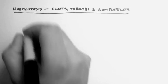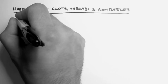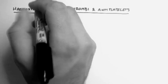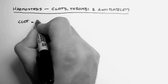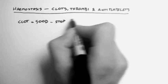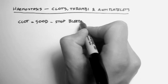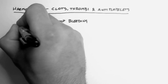Now first of all, I want to make a couple of definitions. The first one is a clot. Now a clot is good. A clot stops bleeding. For instance, when you injure yourself, you clot and stop bleeding.